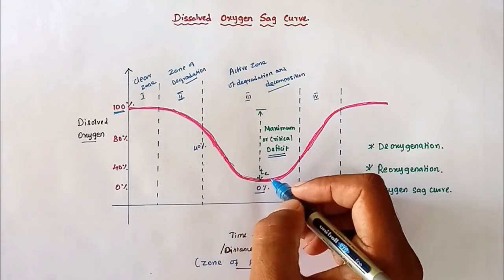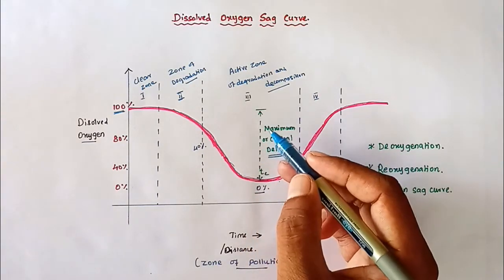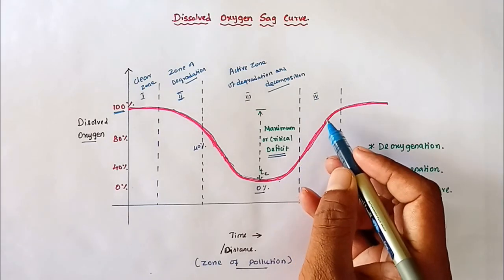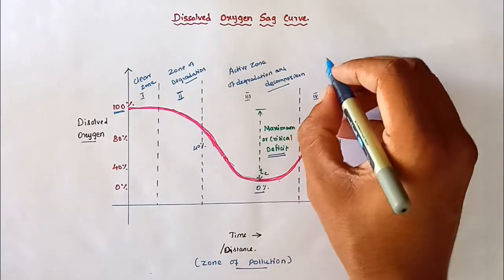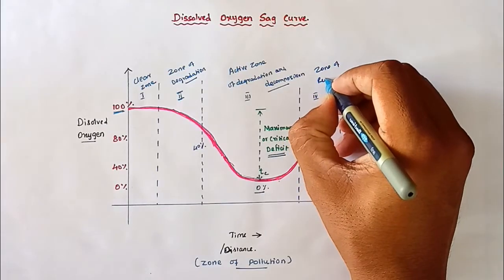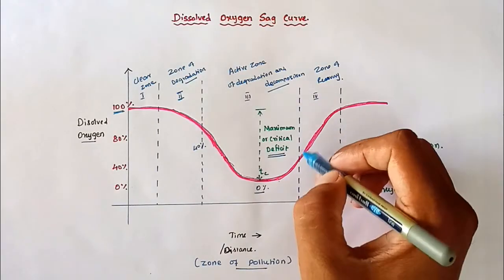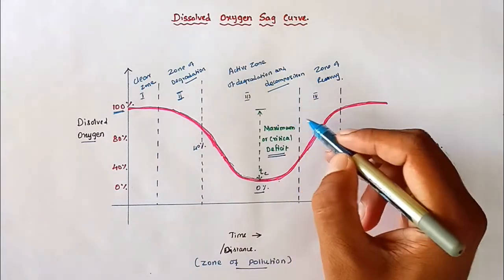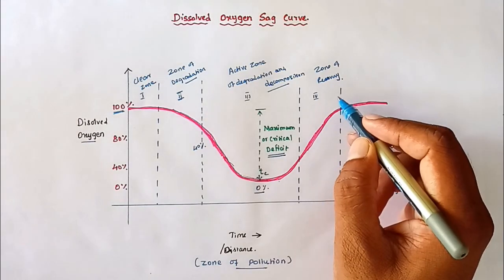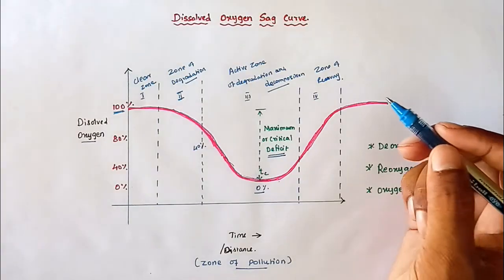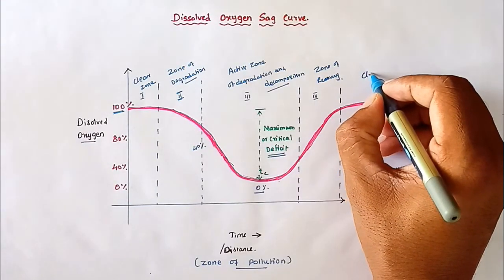This point is called the maximum critical oxygen deficit. After that, reoxygenation begins — meaning oxygen is added back into the water — and the recovery process starts. The fourth zone is the zone of recovery, where reoxygenation starts very actively. All the effluent is decomposed in the active zone of degradation, so BOD is reduced and dissolved oxygen rises because of the reoxygenation capacity.